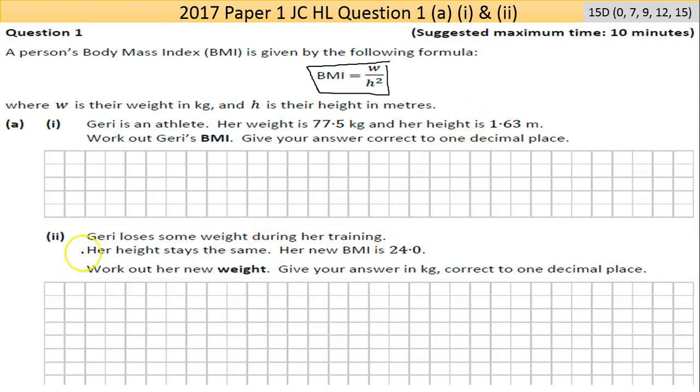I'll go back to part 2 here. Geri loses some weight during her training, her height stays the same, her new BMI is 24.0. Work out her new weight, give your answer in kilograms, correct to one decimal place.